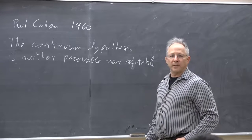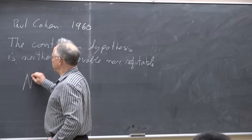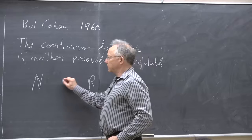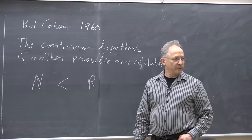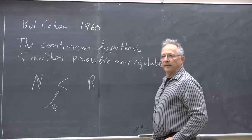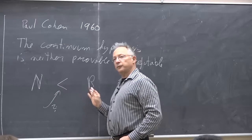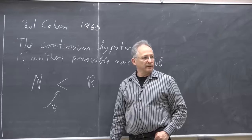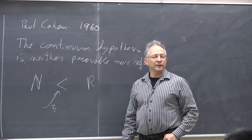What is the continuum hypothesis? If we look at sizes of infinity, the minimum size is the infinity of the natural numbers, and then there is the infinity of the real numbers. Cantor proved that there is a strict separation — the real numbers are strictly bigger than the natural numbers as an infinity. A natural question arises: is there anything in between? Is there some size, a subset of the real numbers, strictly bigger than the natural numbers but strictly smaller than the full real numbers? Paul Cohen proved in 1960 that we can neither prove it nor disprove it.